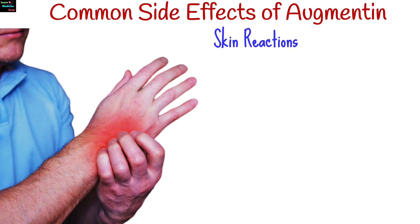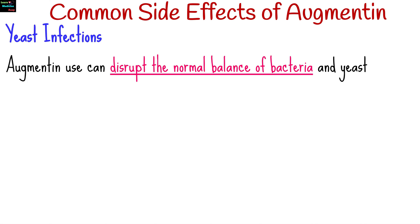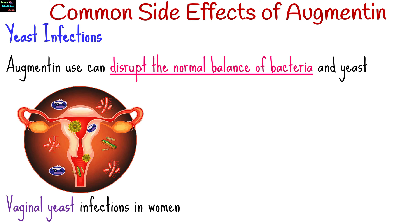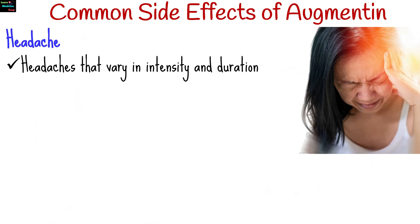Some individuals may experience skin reactions while taking Augmentin, such as rash, itching or pruritus, and hives or urticaria. Augmentin use can sometimes disrupt the normal balance of bacteria and yeast in the body, leading to vaginal yeast infections in women and oral thrush in both children and adults. Headaches are reported by some individuals taking Augmentin, and these headaches can vary in intensity and duration.